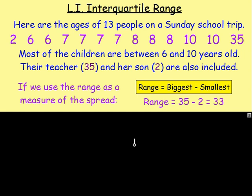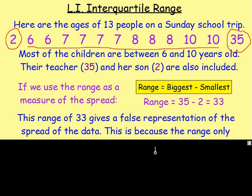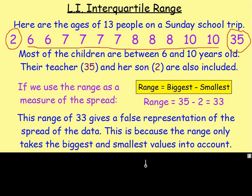The range here is 33 years, but that makes it look like there's a big spread — a big variation between all the ages. It's saying the difference between the oldest and youngest person is 33 years, so you think they're all spread out like ages in a supermarket. But that's not true for this set of data — everybody is between 6 and 10, apart from the two people at either end. So the range here doesn't give a very fair representation of the ages. That is because the range only looks at the biggest and smallest numbers, and sometimes these numbers are known as outliers — they may be a lot bigger or a lot smaller than the rest of the data.